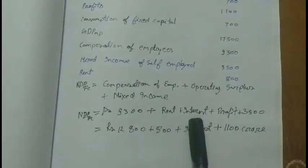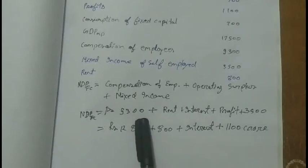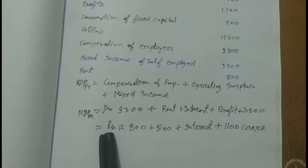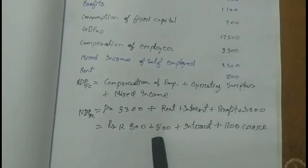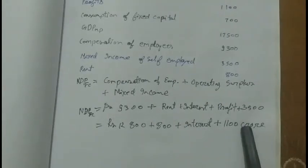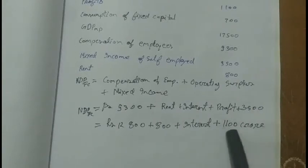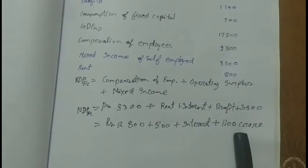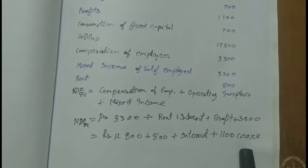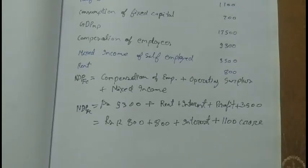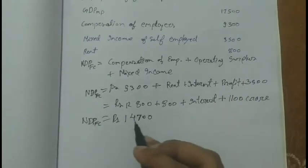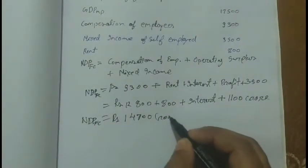Operating surplus equals rent plus interest plus profit. Compensation of employees is 9300, mixed income is 3500 — these both together become Rs. 12,800. Plus rent 800. Interest is not given in the question — we have to calculate it. And profit is 1100 crores. So NDPFC so far equals 14,700 crores plus interest.